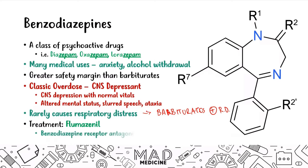Flumazenil is rarely used in real life because it can cause seizures, but for USMLE Step 1, you'll encounter questions where a patient presents with benzo toxicity — altered mental status and slurred speech without respiratory distress — perhaps a chronic alcoholic who overdosed on their medications, and the answer for treating the overdose is flumazenil.